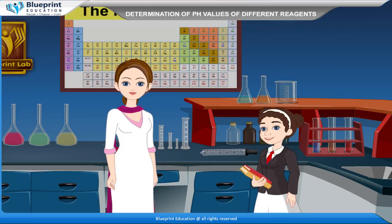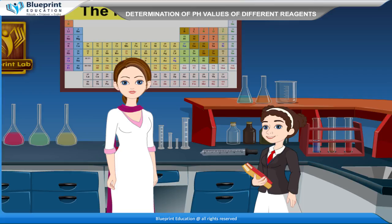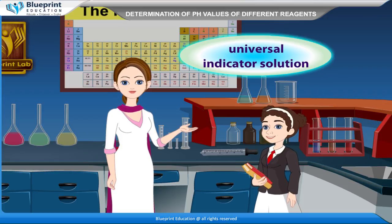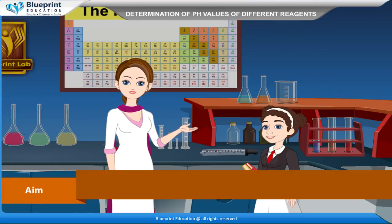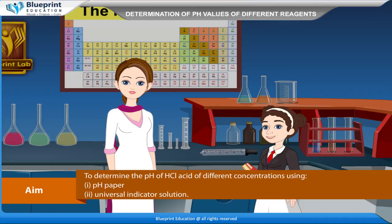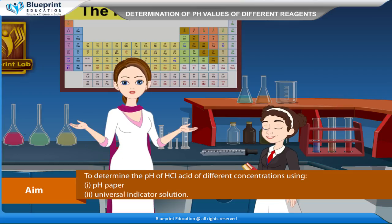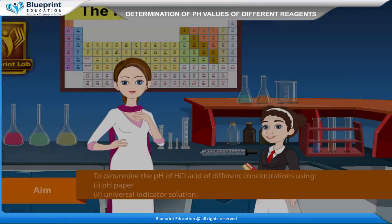Let's do an experiment to determine the pH of HCl acid of different concentrations using pH paper and universal indicator solution. Our aim is to determine the pH of HCl acid of different concentrations using these two methods.